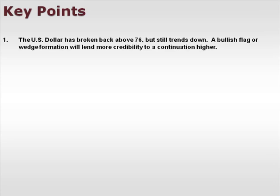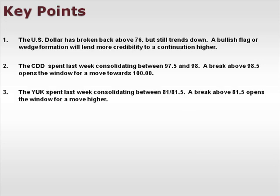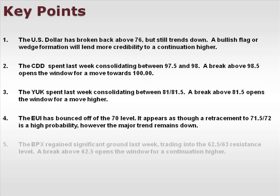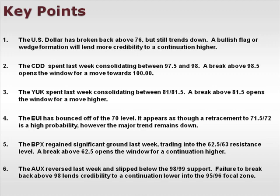Let's take a look at a few key points. The U.S. dollar has broken back above 76 but still trends down — a bullish leg or wedge formation will lend more credibility to a continuation higher. The CDD consolidated between 97.5–98 last week; a break above 98.5 opens the window for a move towards 100. The YUK consolidated between 81–81.5; a break above 81.5 opens the window for a move higher. The EUI bounced off the 70 level, with a retracement to 71.5–72 appearing high probability, though the major trend remains to the downside. The BPX regained significant ground, trading into the 62.5–63 resistance level; a break above 62.5 opens the window for a continuation higher. The AUX slipped below 98–99 support; failure to break back above 98 lends credibility to a continuation lower into the 95–96 focal zone.